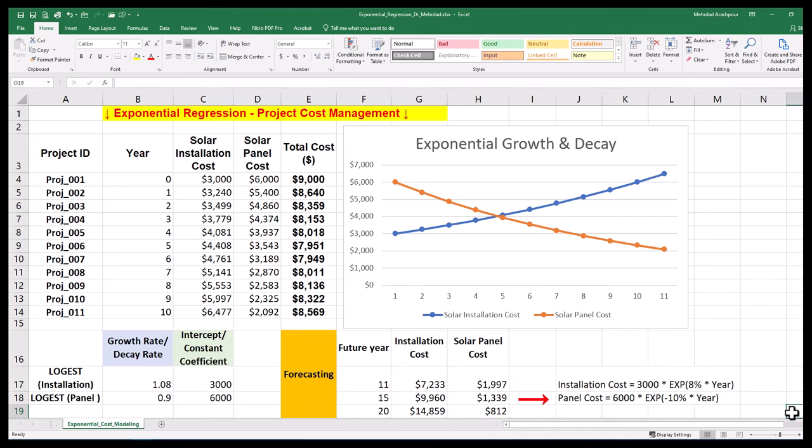We can also predict the decaying panel costs in year 11 using our model. And here it is. An easy and short implementation of exponential regression using only three simple steps in Microsoft Excel. If you found this video useful, please consider subscribing. I hope to have your comments and see you in the next one.